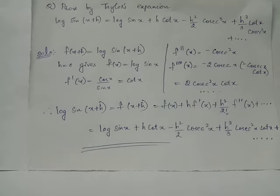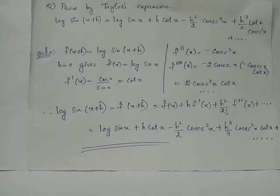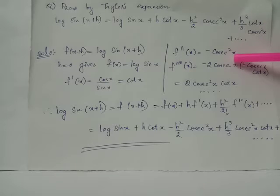We have f''(x), taking the derivative of f'(x) with respect to x. The derivative of cot x is minus cosec squared x.